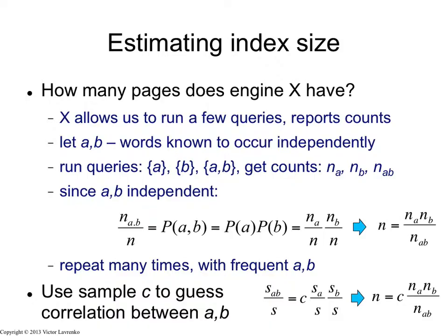So what I have is N of ab divided by N is the same thing as N of a times N of b divided by N squared, assuming the words are independent, and that's how I've picked that. So from that, I can compute N. And N turns out to be number of pages that contain the word a times number of pages that contain the word b divided by the number of pages that contain both words.